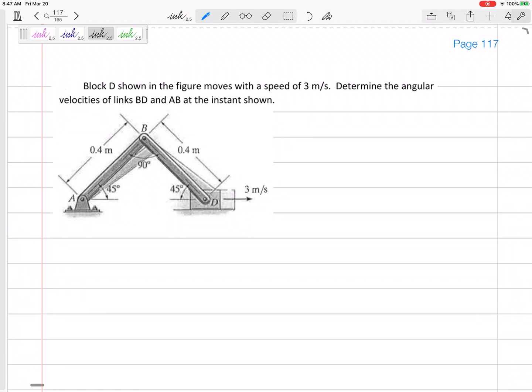All right, let's look at this problem right here. Block D slides, moves in the figure at 3 meters per second. So if it's moving at 3 meters per second, what's the angular velocity of link BD and angular velocity for link AB?